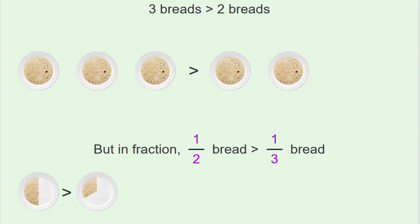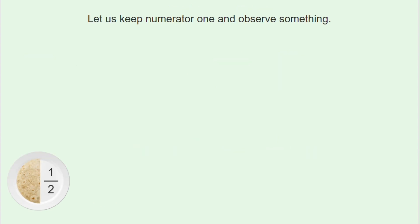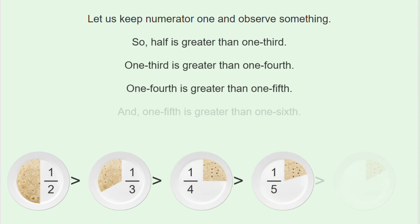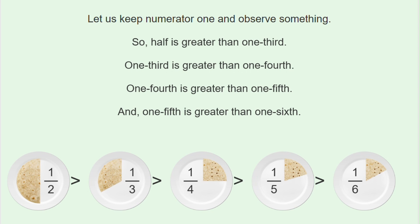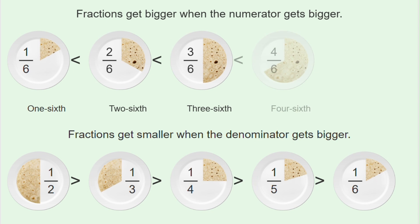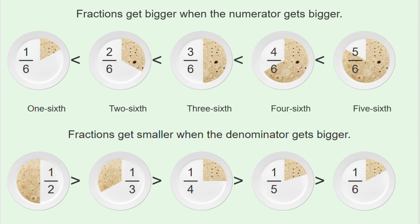Let us keep the numerator as one and observe something. Half is greater than one third, one third is greater than one fourth, one fourth is greater than one fifth, and one fifth is greater than one sixth. Fractions get bigger when the numerator gets bigger, and fractions get smaller when the denominator gets bigger.